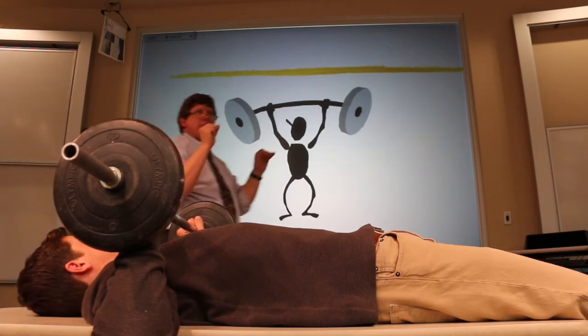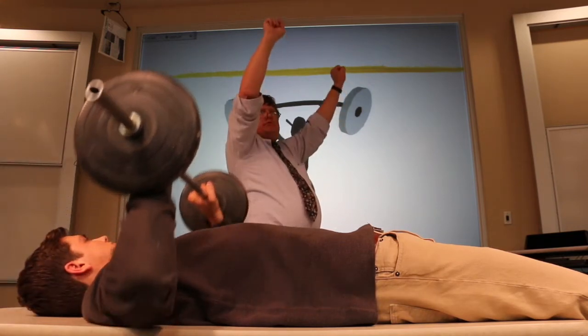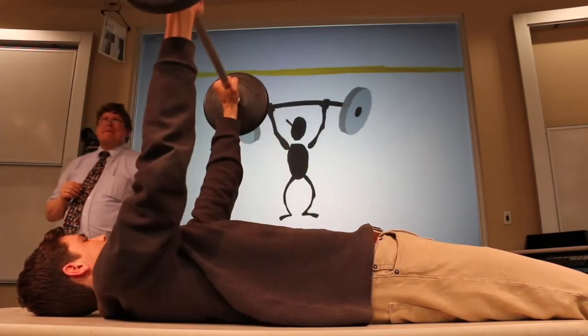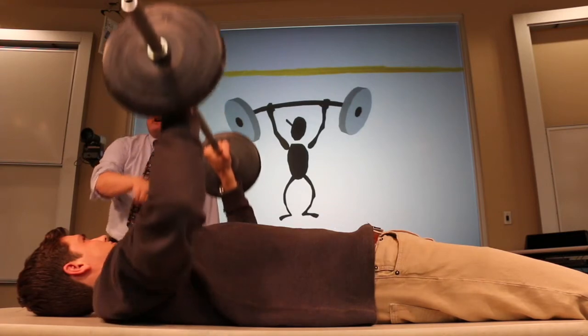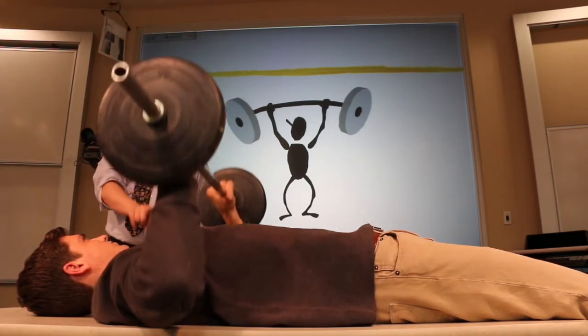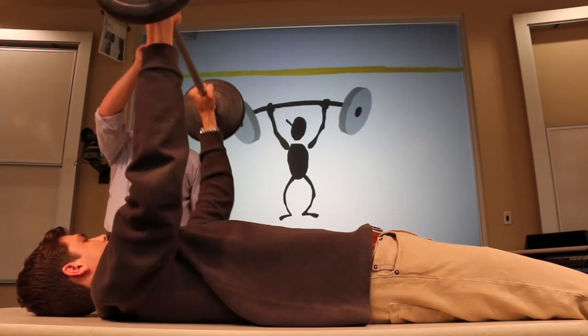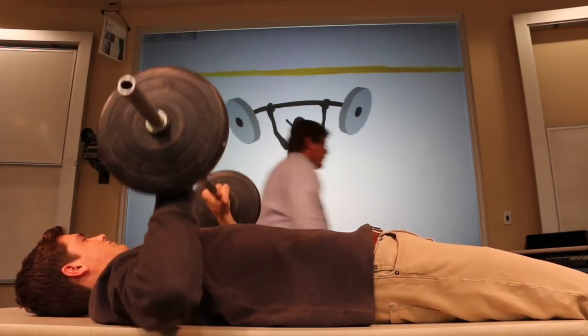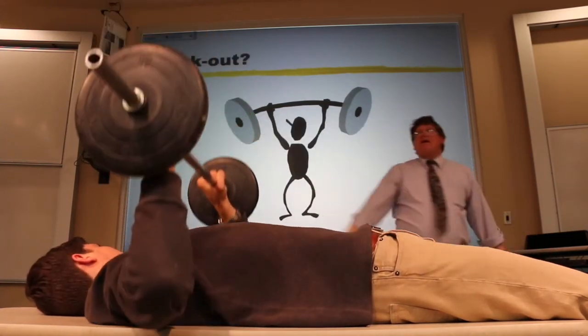Now, what I'd like you to do, Bennett, is just slowly up, slowly down. Slowly up, slowly down. A little slower. Plus 1,000 joules, minus 1,000 joules. Plus 1,000 joules, minus 1,000 joules. Plus 1,000 joules, minus 1,000 joules. Why do we call this a workout?